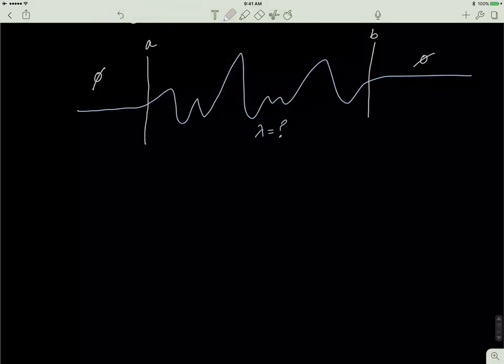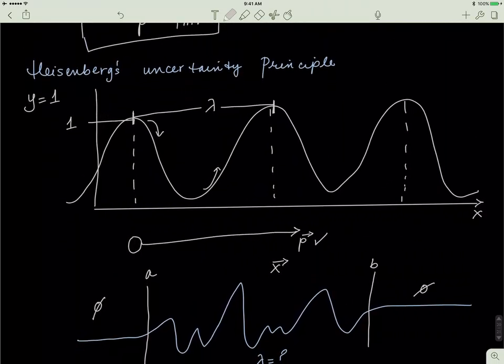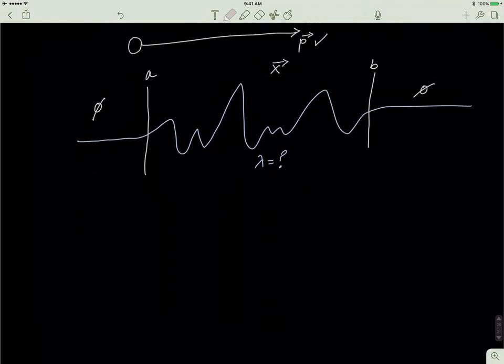As you can see, you don't know the wavelength here at all. You can't figure it out. You might not know the wavelength here, but what you do know is you know the position a little bit better. Now the position of the particle is somewhere between a and b. In this example, it was somewhere along minus infinity to positive infinity, but here it's confined in the range of a and b.